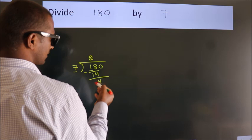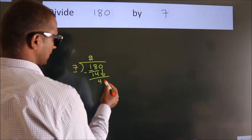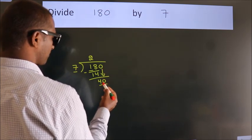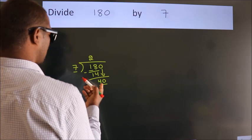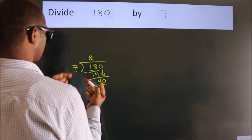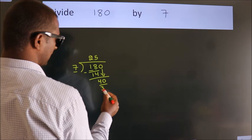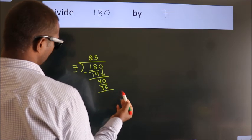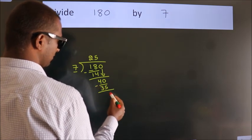After this, bring down the beside number, so 0 down. So 40. A number close to 40 in the 7 table is 7 fives, 35. Now we subtract. We get 5.